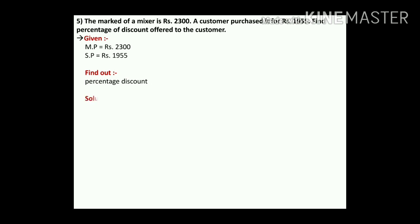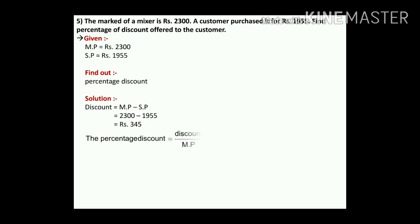Solution: discount equals MP minus SP, which is 2300 minus 1955. We get rupees 345. This is the discount in rupees. Now we convert to percentage: percentage discount equals discount upon MP into 100. That is 345 upon 2300 into 100. After cancellation we get 15%.